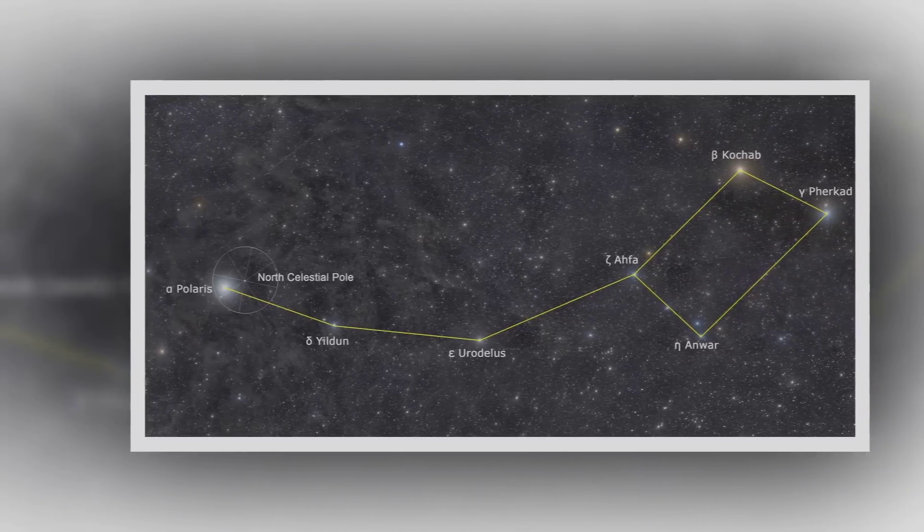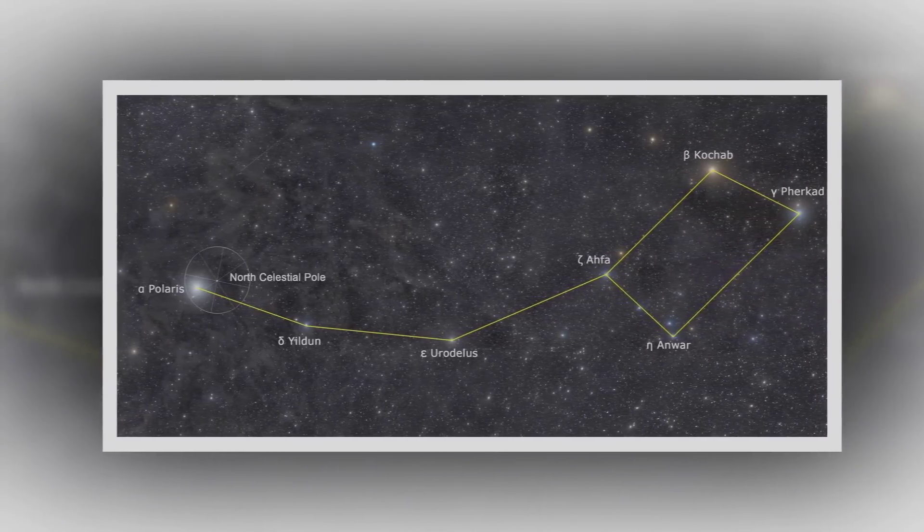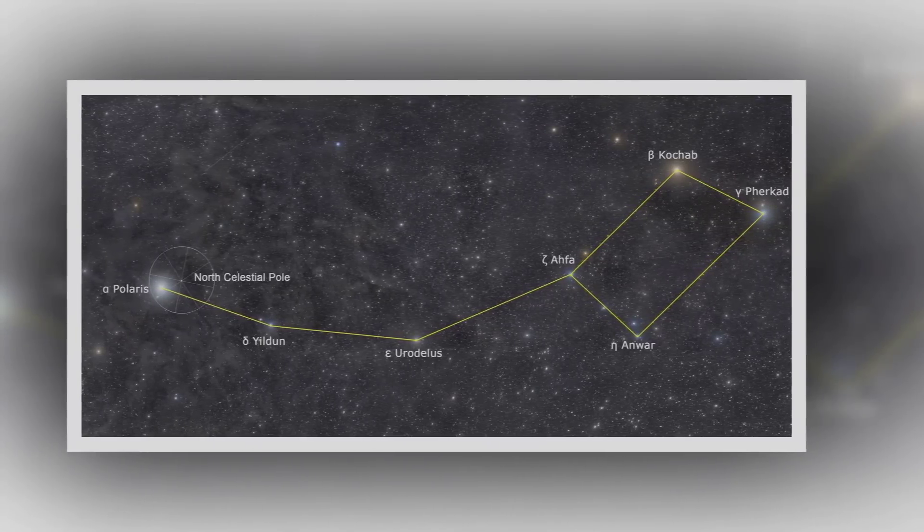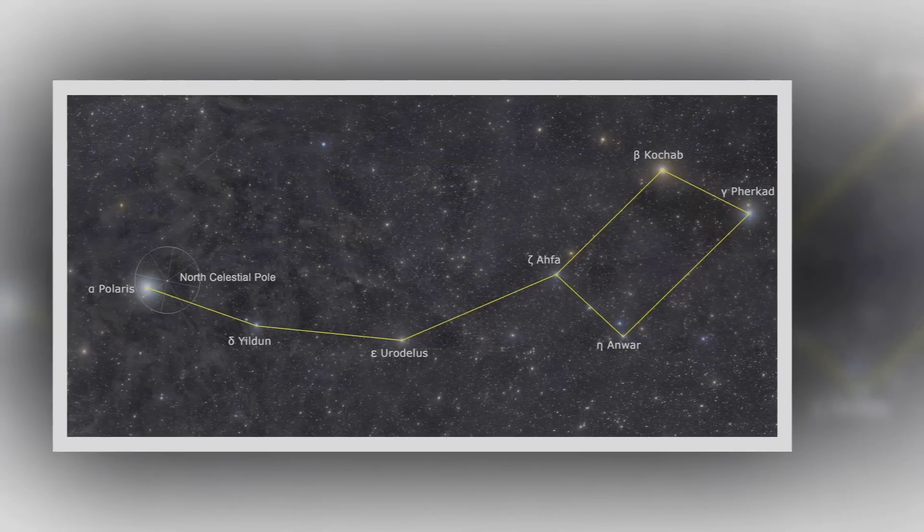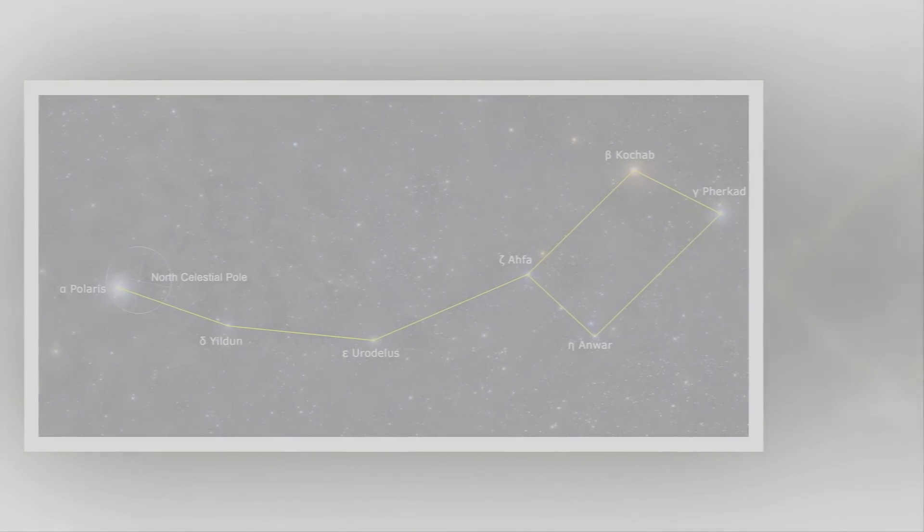The handle and the bowl are connected by Ahfa al Farkadain, a main sequence star. The bowl of the Little Dipper consists of three stars, Anwar al Farkadain, Pherkad, and Kochab, the second brightest star in Ursa Minor.